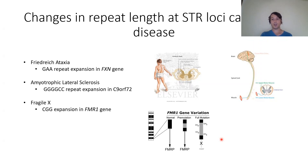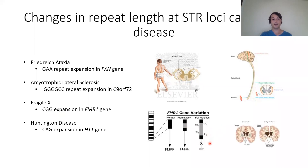Third is Fragile X, caused by a trinucleotide CGG expansion in the FMR1 gene. In the normal gene there's little repeat, but in the pre-mutation state symptoms begin with a repeat expansion, and in the full mutation that repeat becomes much longer. The CpG sites introduced cause methylation and silencing of FMR1. And finally, Huntington disease, caused by a trinucleotide expansion in HTT.